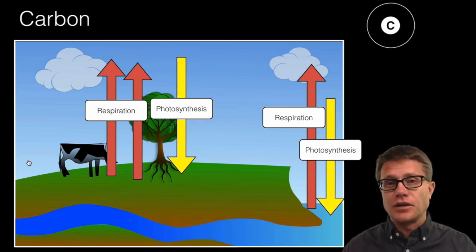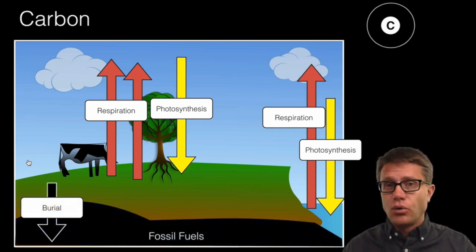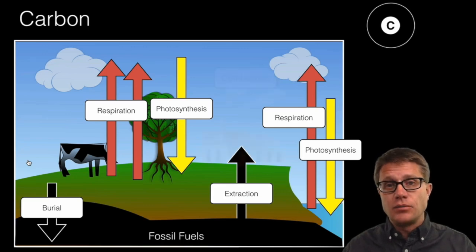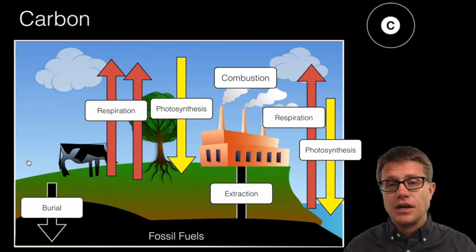A lot of that carbon is going to be in the atmosphere as carbon dioxide. Now we can also take that carbon, and it can be covered by rock, and we can create coal and oil, fossil fuels. So we're storing that carbon in the rock. We can extract it again by digging a well, and then we can have combustion where a factory releases that carbon dioxide back into the atmosphere, and the whole cycle continues again.